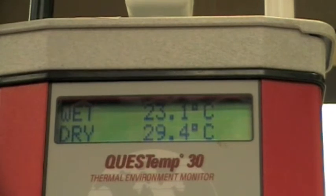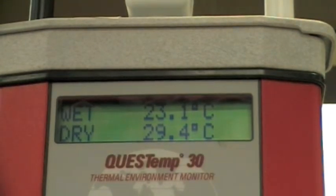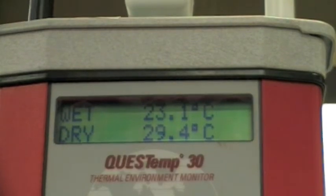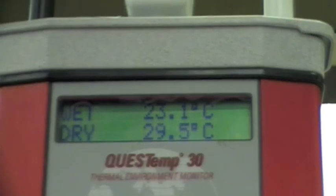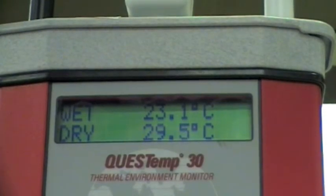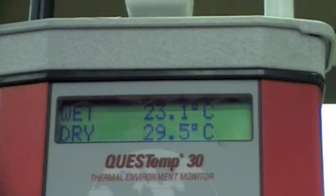Currently on display are the wet and dry bulb temperatures. You can see there's a difference. The dry bulb temperature here in the kitchen at the moment is 29.4 degrees centigrade. The wet bulb is 23.1, indicating that it's definitely not 100% humidity in here. There is a difference in temperature.